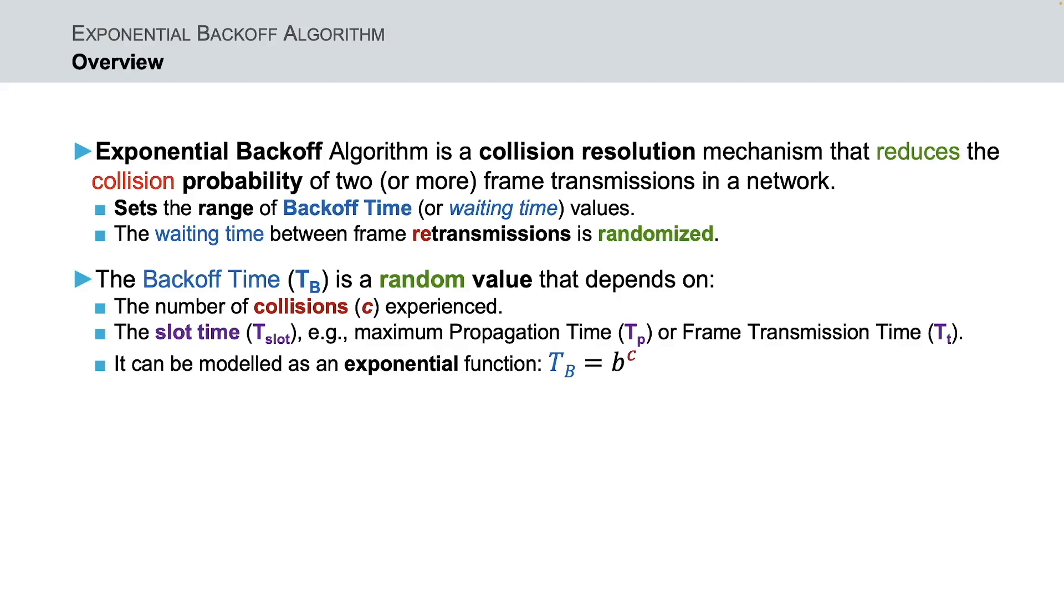Backoff time can be modeled as an exponential function as it can be seen here, where t_b is the backoff time, b is the multiplicative factor or base, and c is the number of retry attempts observed. Finally, the value of c is incremented each time a retry attempt is observed, leading thus to an exponential rise in delay.